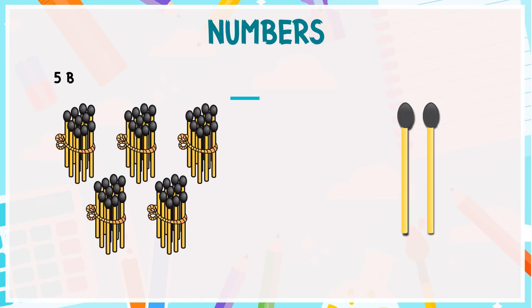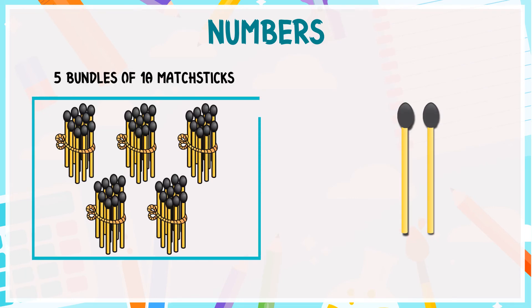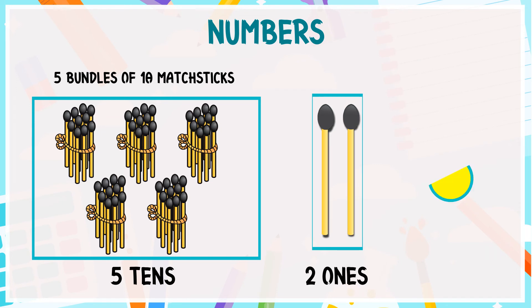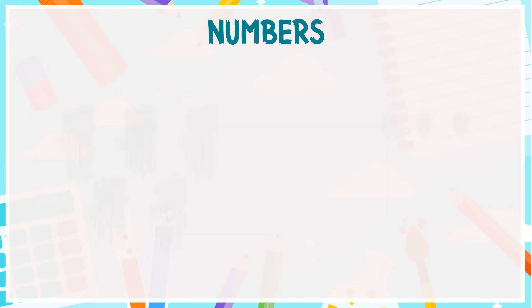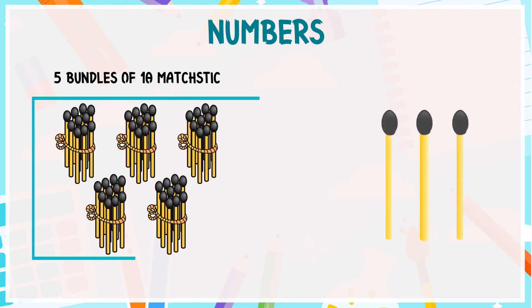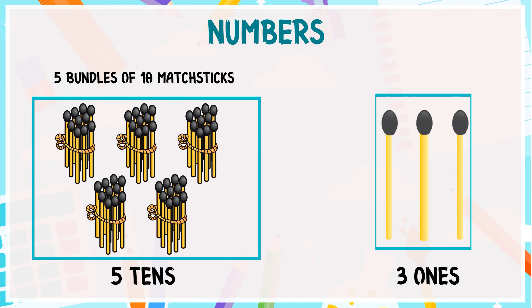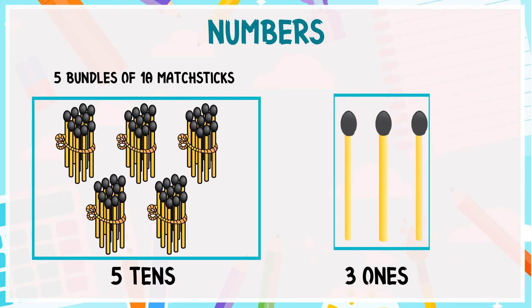Let's draw 5 bundles of 10 math sticks in each, so it will be 5 tens and these are 3 ones. So, 5 tens and 3 ones is equal to 53.